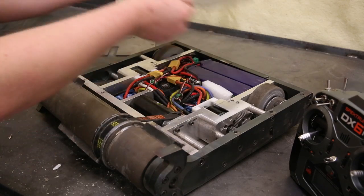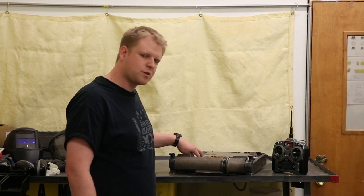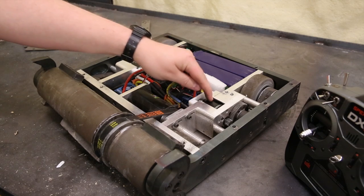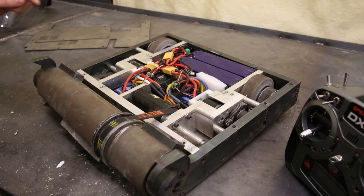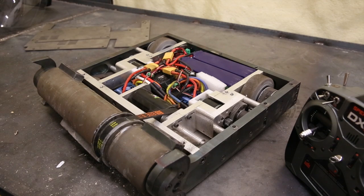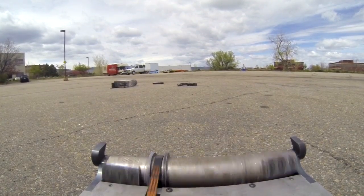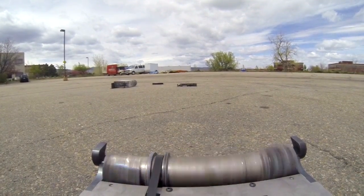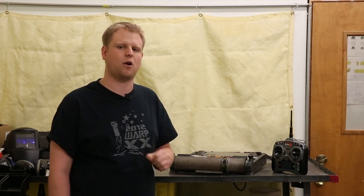So inside we've got three big brushless controllers. Each of the drive motors can handle 150 amps, whereas the weapon motor can handle 250 amps. It's powered by two lithium polymer batteries that are six cells and four amp hours each. It can deliver at 90C, which is about 700 amps peak current draw.